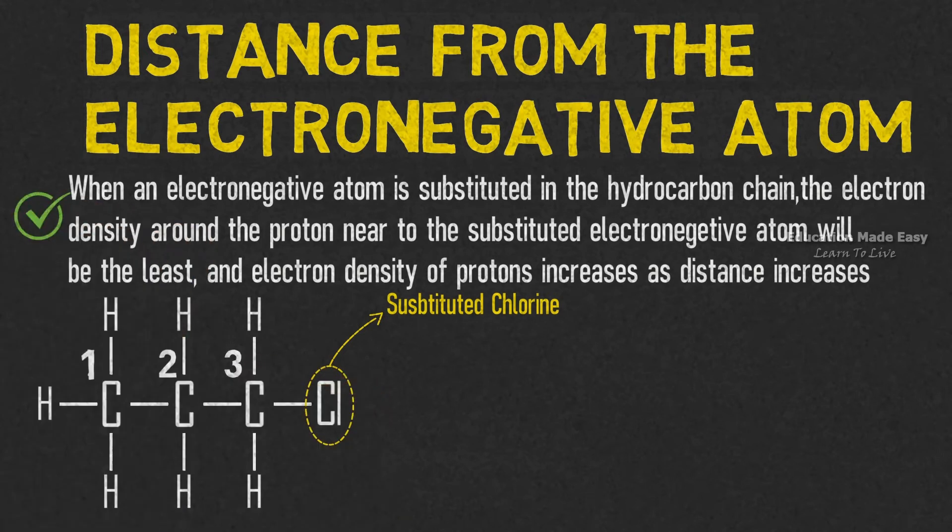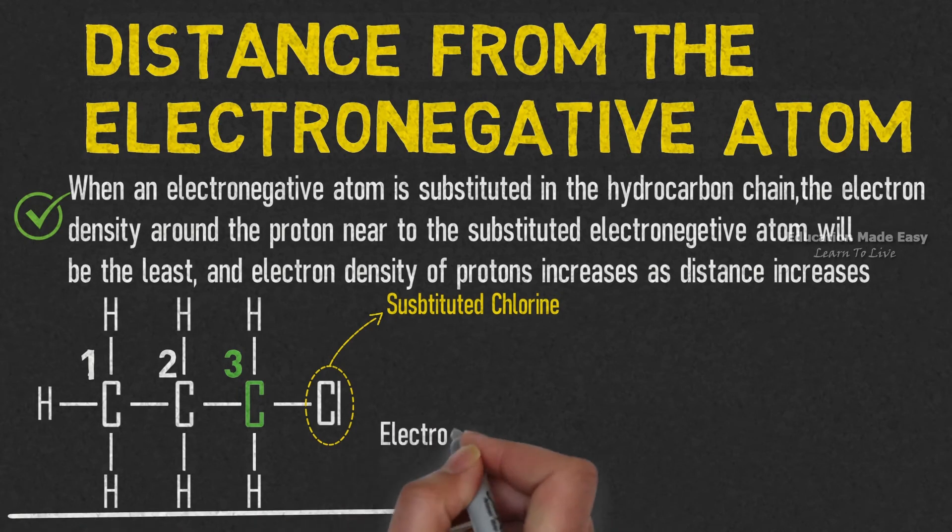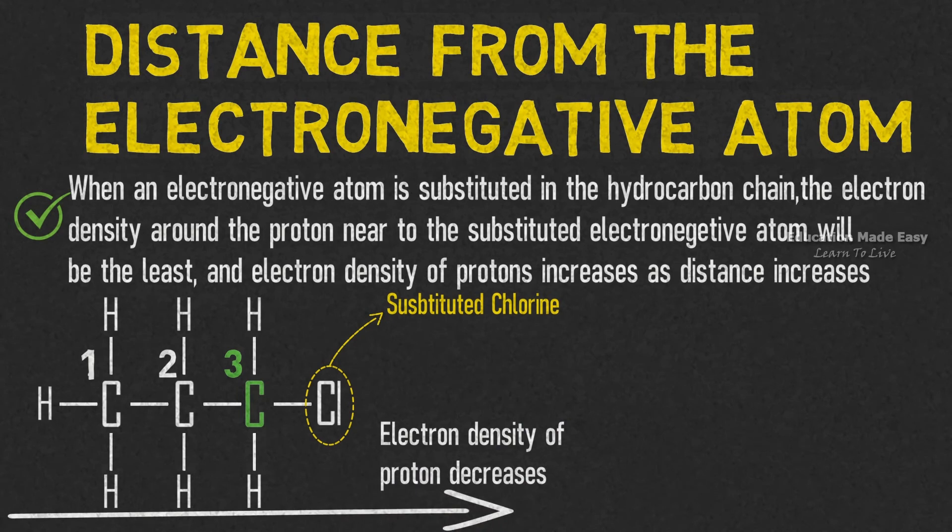As per the above sentence, the third carbon, which is close to chlorine, will be having the least electron density. This means, as we move towards the chlorine atom, the electron density around the proton decreases.